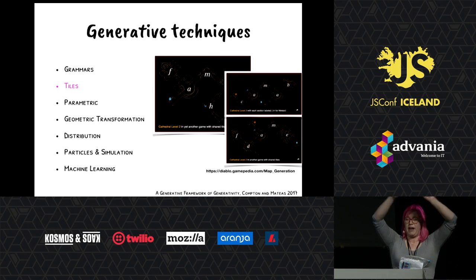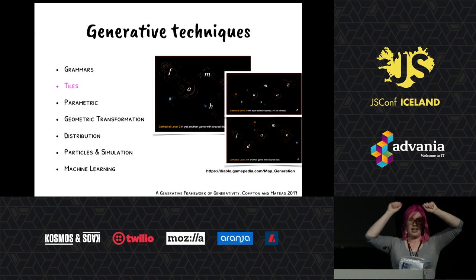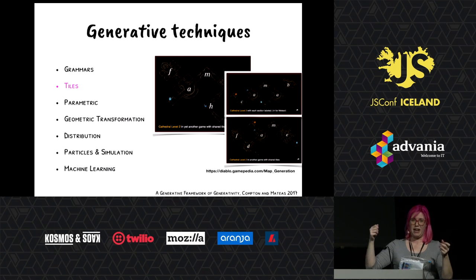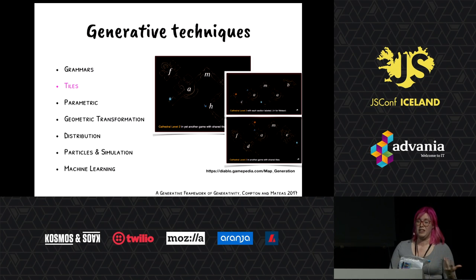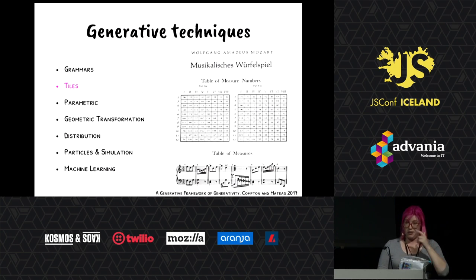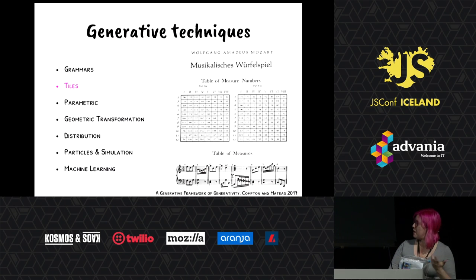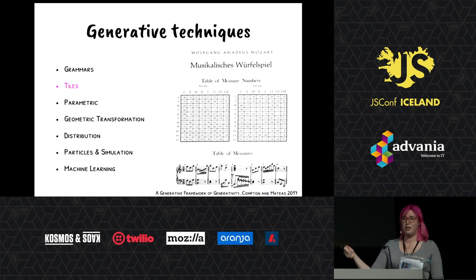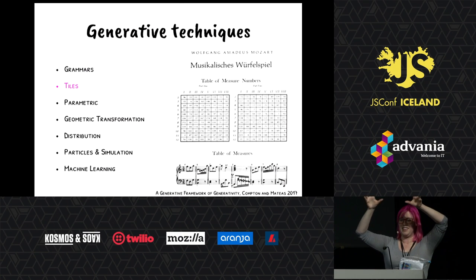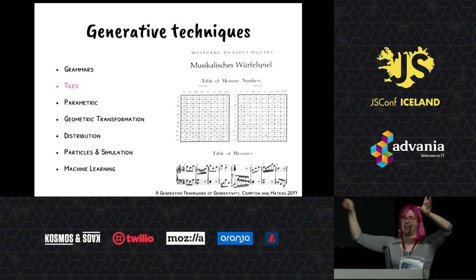You can also do tiles — if you have something split up into even sections, you can put things into each section. If you've ever played Settlers of Catan where you have a grid and you're putting tiles randomly on it, that's using tile-based things. Diablo was one of the first games to use this for map generation. This is one of the oldest examples: tile-based music. This is not actually by Mozart even though the publisher said it was — it's called dice music. You roll some dice, pick out the measure, put a bunch of measures together. If music is a grid of measures, you can just paste in the tiles of new measures.